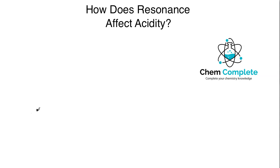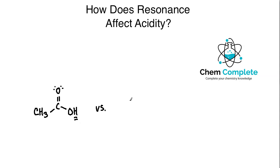The first set is going to compare acetic acid relative to ethanol. Acetic acid is a carboxylic acid, a type of functional group, and the acid part in the name refers to the acidic proton. We're going to compare that to its alcohol counterpart, ethanol, which could easily be oxidized into a carboxylic acid.